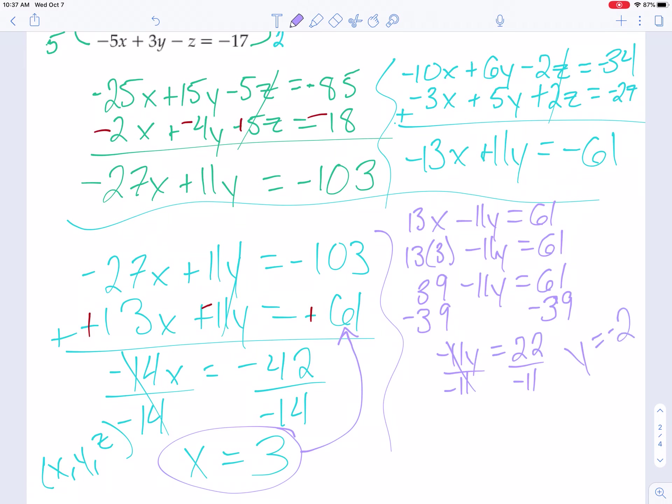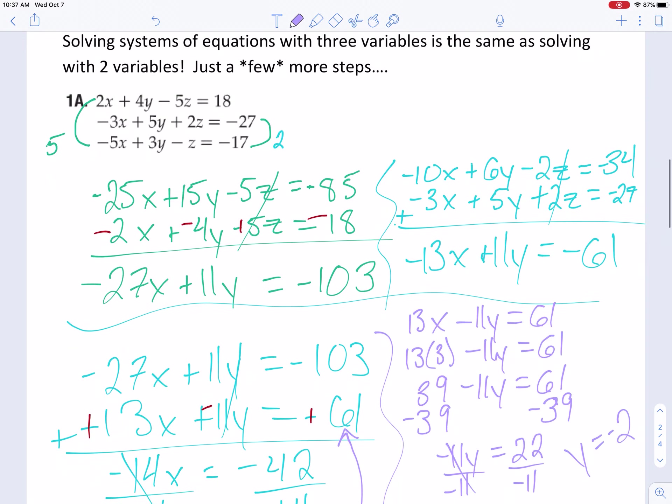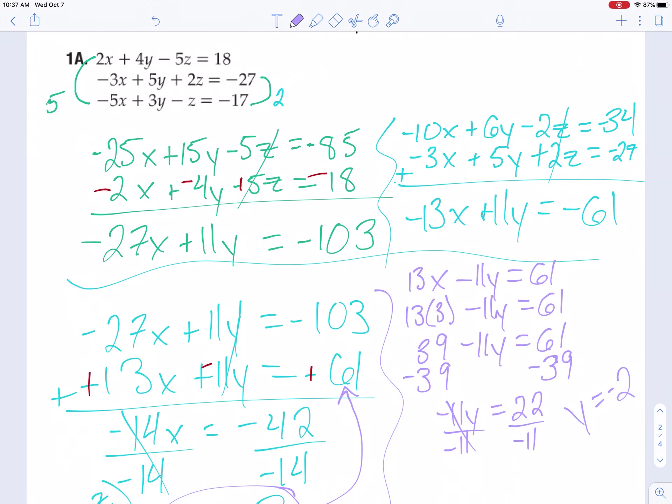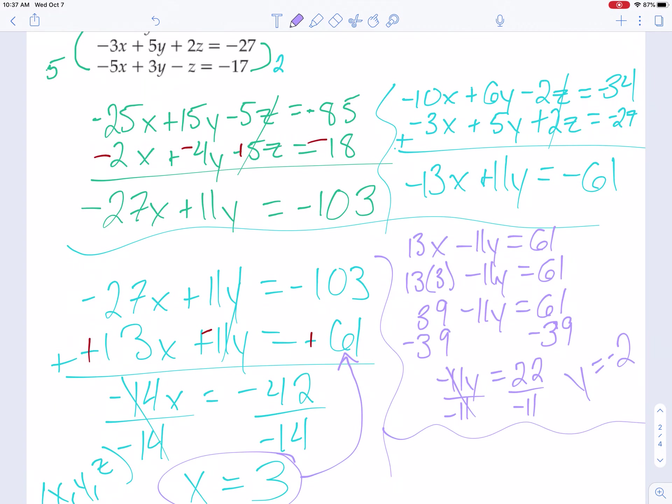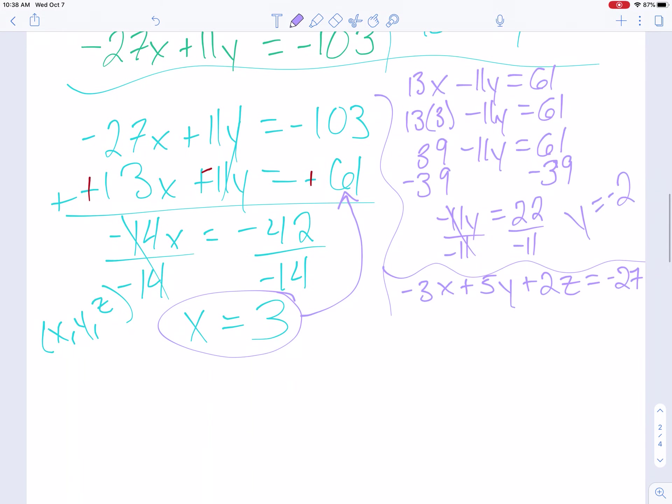We're getting closer, but I still need to solve for z. It doesn't look like I have any equations that have just a z and plus one variables. So I think what I'm going to do is go back, maybe I'll go back to that middle formula. I kind of like that one. So let's write that original one down. Negative 3x plus 5y plus 2z equals negative 27. All right, so I know that x is 3 and y is negative 2. Solving for z. All right, so negative 9 minus 10, because negative 9 minus 10 is negative 19.